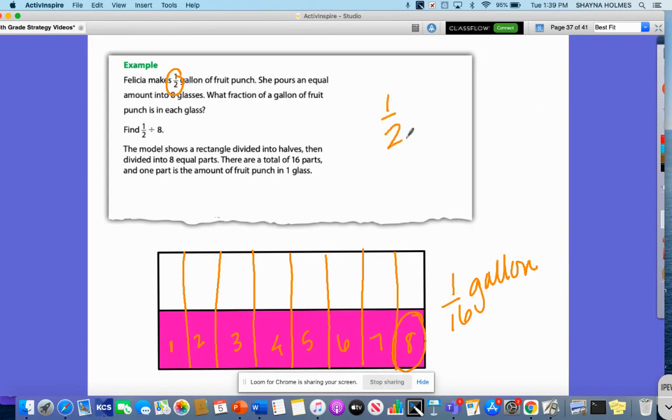So if I took one-half and I divided it by eight, this would be the same thing as one-half times one-eighth and that would give me one-sixteenth. One-sixteenth gallon would go in each of the eight glasses.